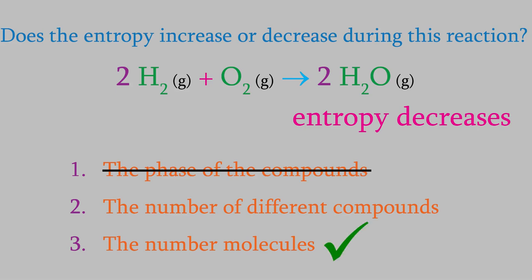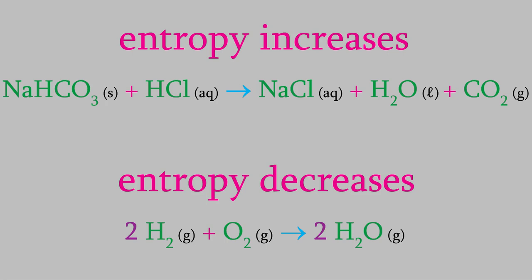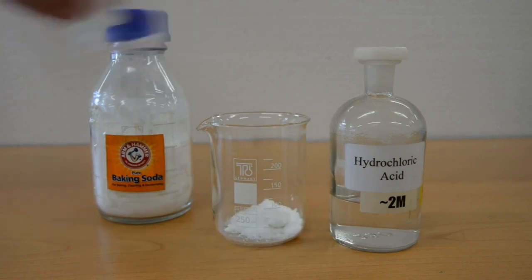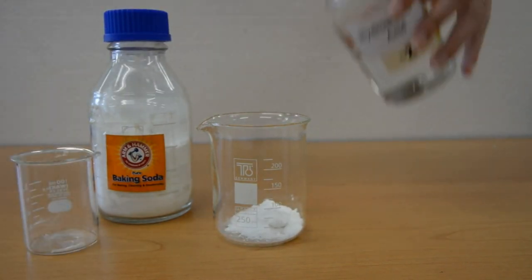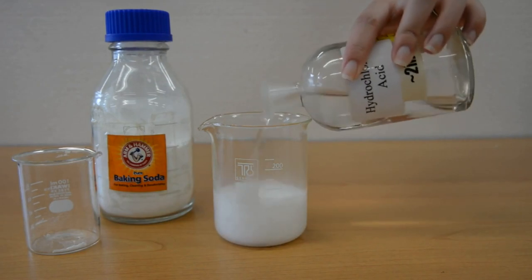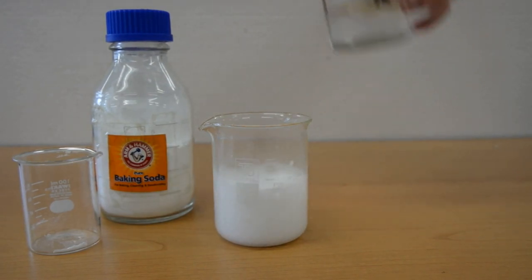But notice what that means for these two reactions. Since the entropy increases in the first reaction, it can happen spontaneously even if it's in a closed system. And here's that reaction. As you can see, we're starting with solid sodium bicarbonate, which is the same thing as baking soda, and one of the products is CO2 gas, which you can see bubbling out of the beaker.